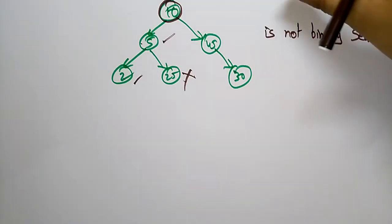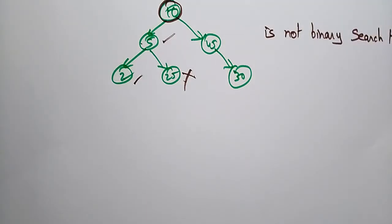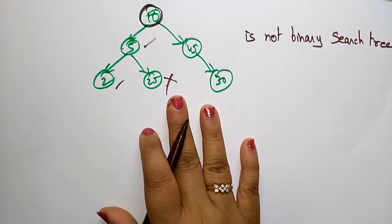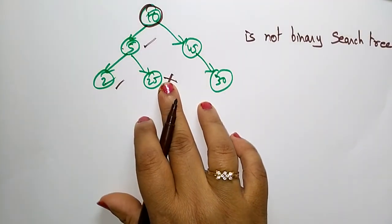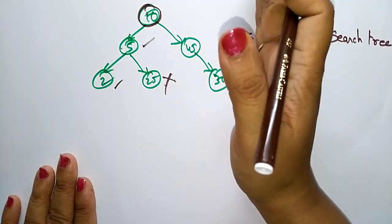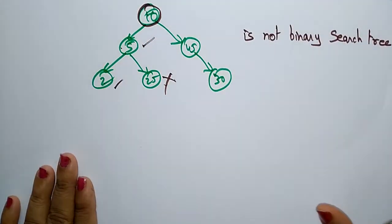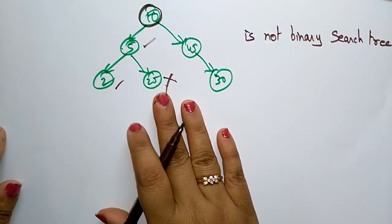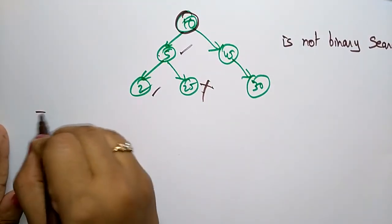Let us continue with the topic: binary search tree. In the previous video I explained what a binary search tree is and what conditions you have to follow to implement it. I said this is not a binary search tree because here 25 is greater than 10 — the left side should be all less and the right side should be all greater than the root node. It violates that condition, so it is not a binary search tree, but it is a binary tree.